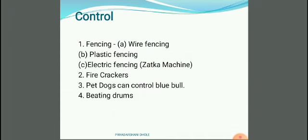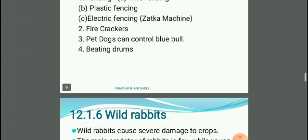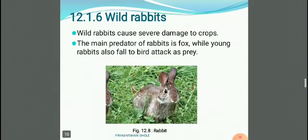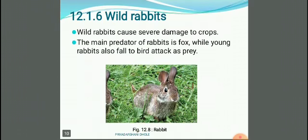How we can control the nilgai: by wire fencing, plastic fencing, electric fencing or jatka machine, firecrackers, pet dogs, and beating of drums. The sixth animal is the wild rabbit. Wild rabbits cause severe damage to crops, and the main predator of rabbits is the fox, while young rabbits also fall to bird attacks.